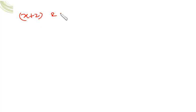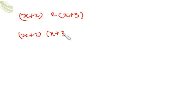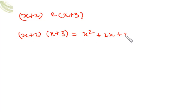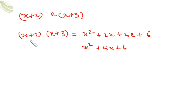Suppose I have two terms: (x+2) and (x+3), and I multiply them. So (x+2)(x+3) gives x·x = x², then +2x, then +3x, then 3×2 = 6. So we get x²+5x+6. This product equals this expression, so the factors of x²+5x+6 are (x+2) and (x+3).